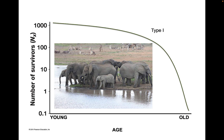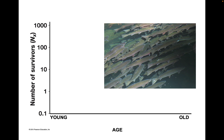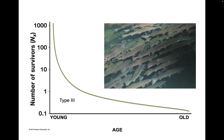This is what we call a Type 1 survivorship curve. I will give you the types so that you can see what's Type 1, 2, and 3, and then maybe ask you about what type of animal would have each type on exams. Now our rainbow trout, in contrast — the female lays a thousand eggs in a given year, and it's likely that most of those will not survive to reproductive age. In fact, they mostly die in their first year, and only a small fraction will survive to adulthood. That's a Type 3 curve.